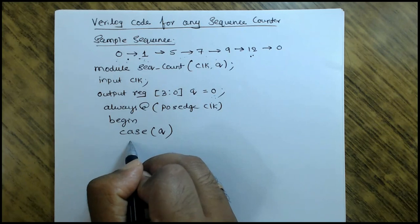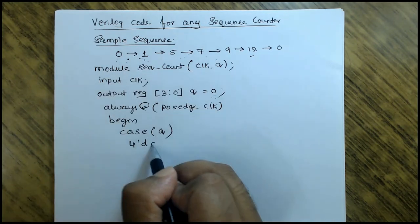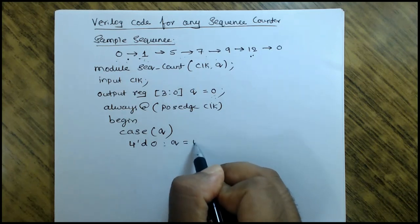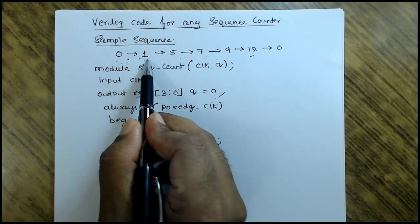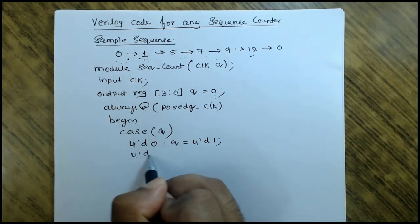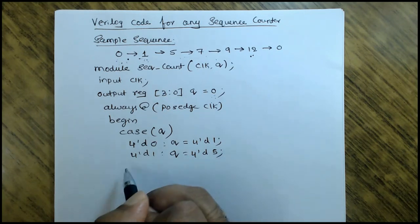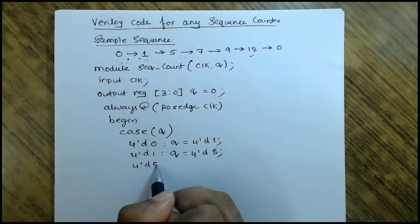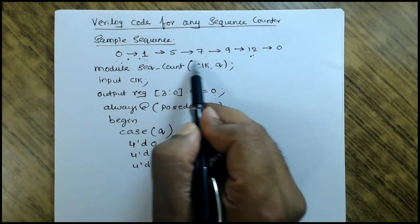I'm taking 4-bit because Q is 4-bit. 4-bit decimal: when it is 0, Q should be assigned with 4-bit d1. When it is 0, the next state should be 1. When it is 1, what should be the next state? The next state is 5. When it is 5, next state is 7. I'm just following the sequence.